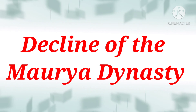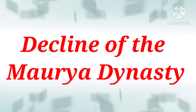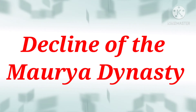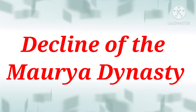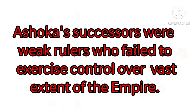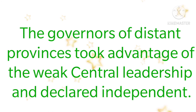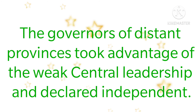The decline of the Mauryan dynasty: The Mauryan Empire began to disintegrate after the death of Ashoka. The major reasons for the decline were: First, Ashoka's successors were weak rulers who failed to exercise control over the vast extent of the empire. Second, the governors of distant provinces took advantage of the weak central leadership and declared independence.